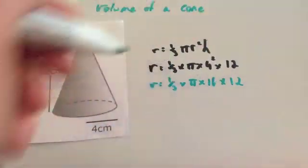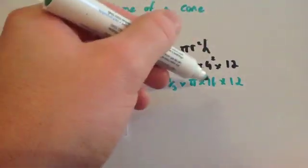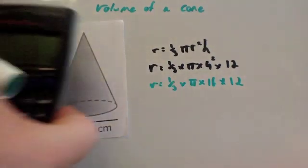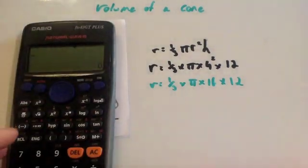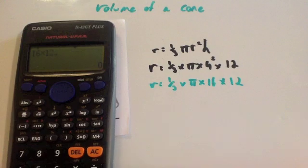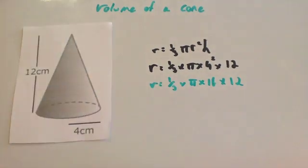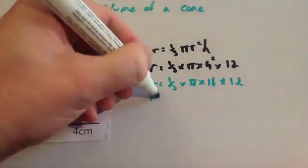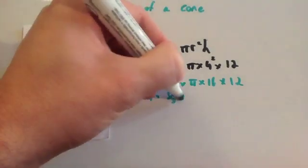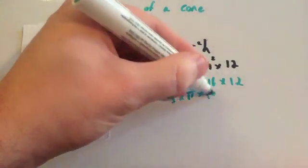Let's work out what this part is. What I'm going to do is work out a third times 16 times 12. So, 16 times 12 equals 192. So, you've got volume equals a third times pi times 192.